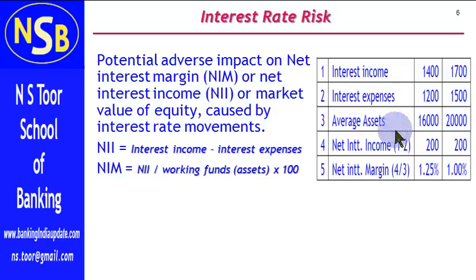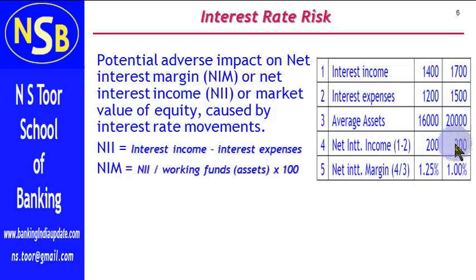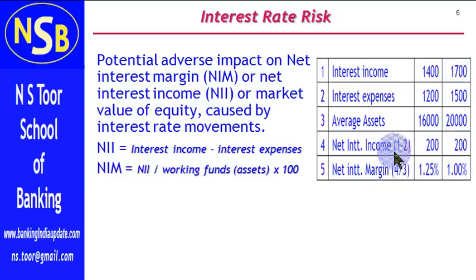First let us calculate the Net Interest Income, that is Interest Income minus Interest Expenditure. So NII is 200 in the first year. In the second year also, 1700 minus 1500, the NII is 200. So NII in both the years is the same.